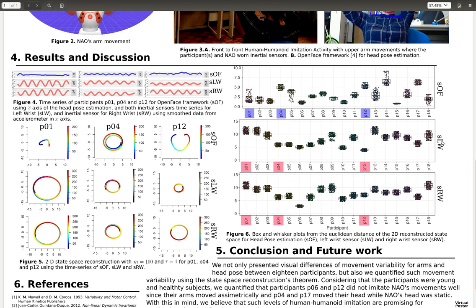This is for the left wrist sensor for participant 1 to 18, highlighting participant 1, 4 and 12.